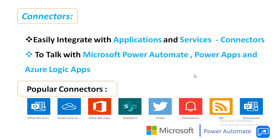Power Automate allows you to connect and easily integrate with one or more applications or services by means of connectors. A connector is a proxy or a wrapper around an API that allows the underlying service to talk with Microsoft Power Automate, Microsoft Power Apps, as well as Azure Logic Apps. In other words, a connector links two applications together and moves data easily from one application to another.